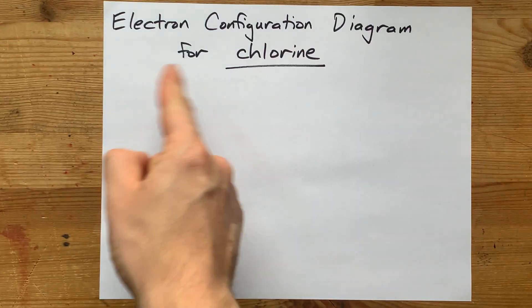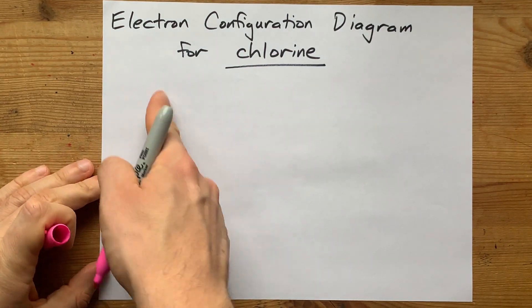You're asked for the electron configuration diagram for chlorine. I'm going to whip it down here.